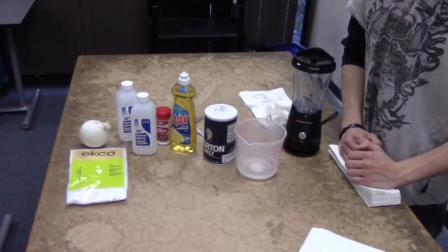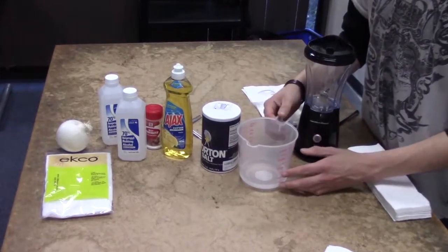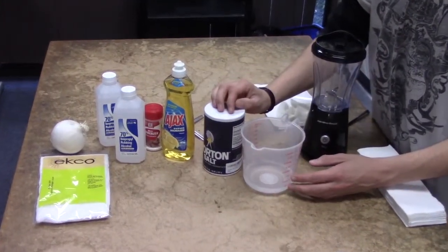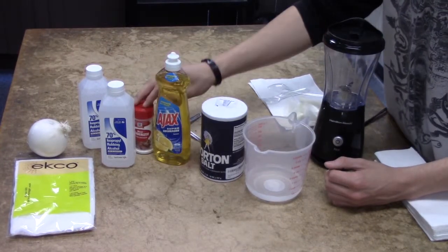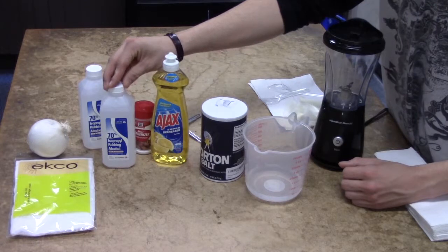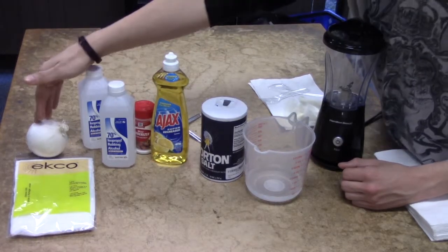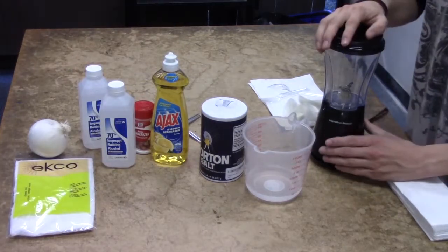For this experiment, we are going to need some simple materials that can be found around the house. We will need 1½ cup of water, 1¼ teaspoon of non-iodized salt, 3 drops of liquid dish detergent, 1½ teaspoon of meat tenderizer, ⅓ cup of chilled rubbing alcohol, ½ of a medium onion, cheesecloth, and a blender.